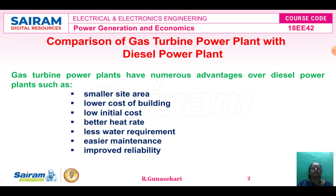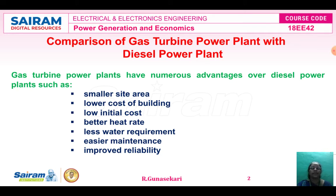The gas turbine power plant has a small site area compared to the diesel power plant, and then low cost of building, low initial cost, and better heat rate compared to the diesel power plant. It also requires less water because in the diesel power plant a huge amount of water is required for burning the fuel, but in the gas turbine power plant water is used for cooling purpose only.